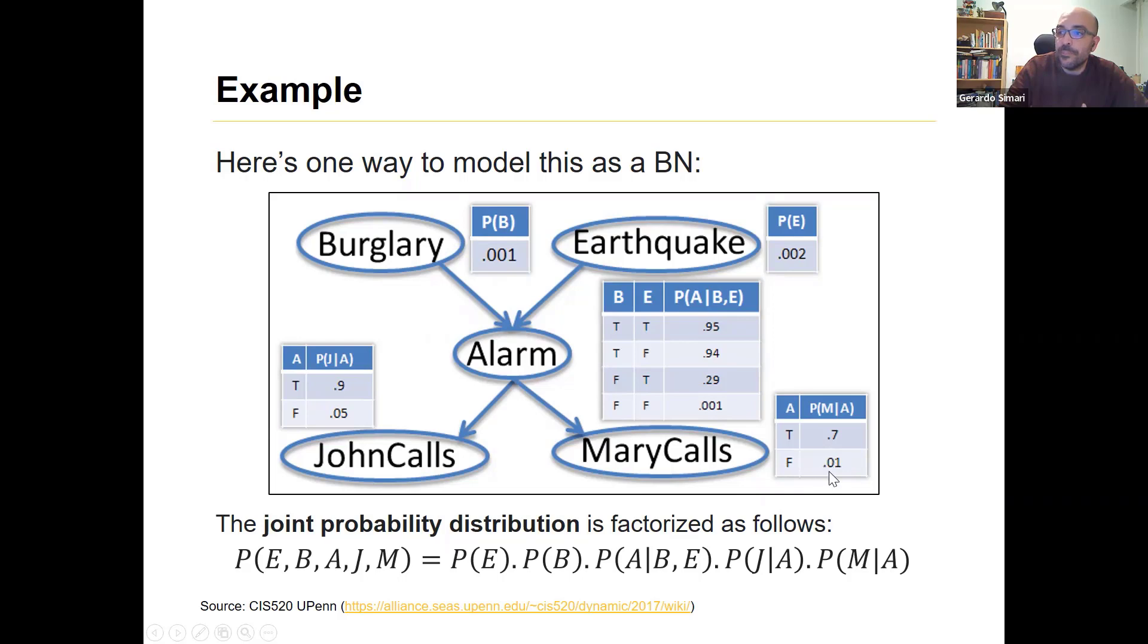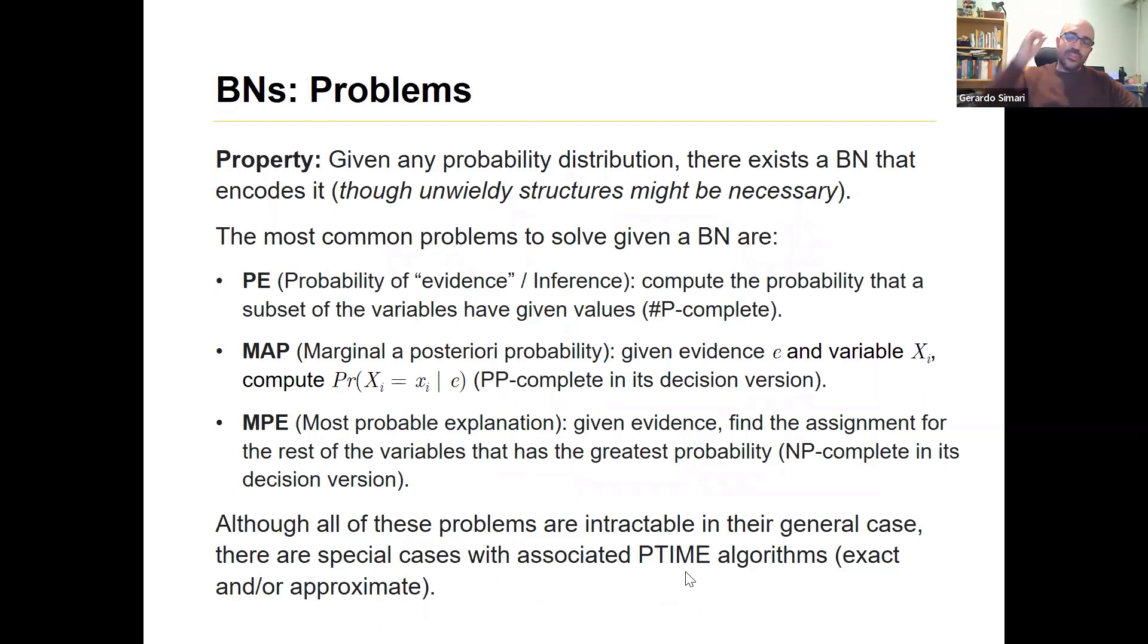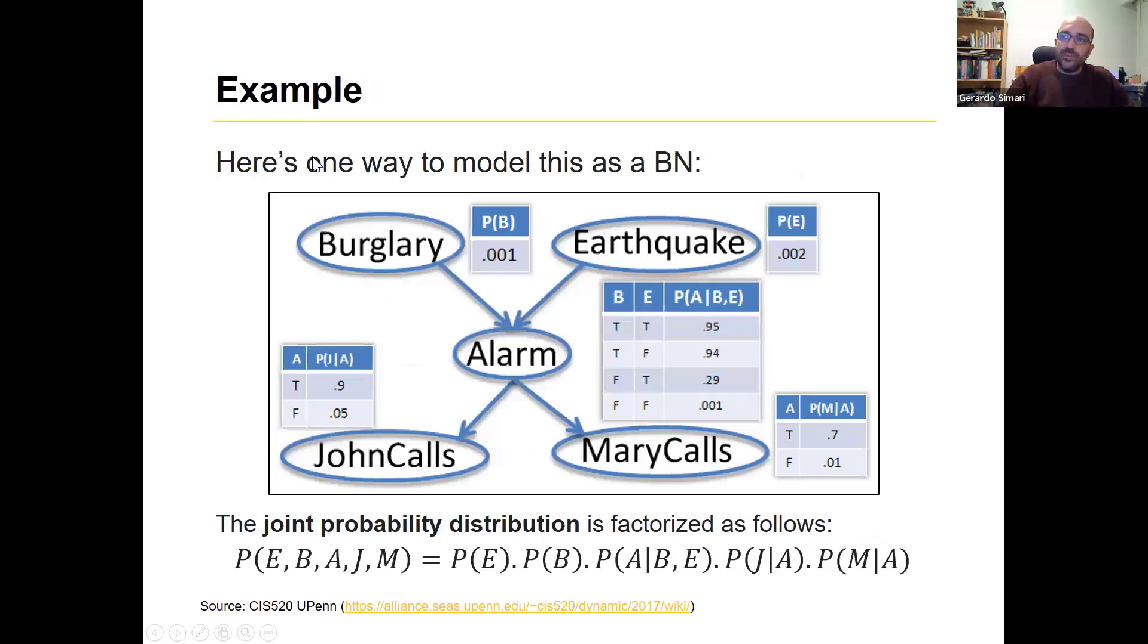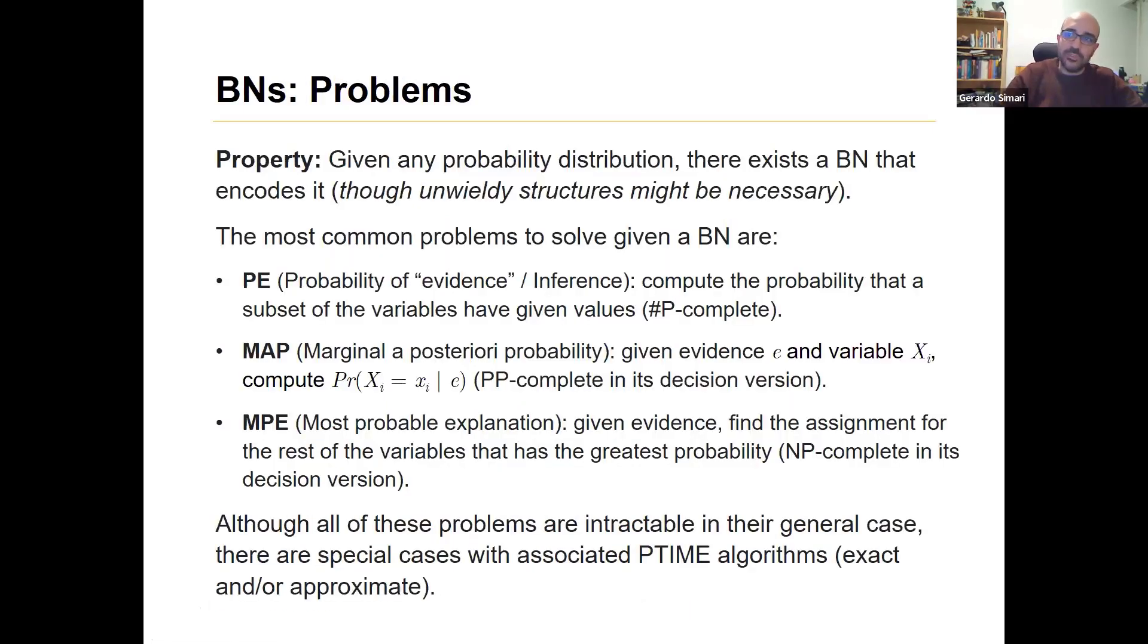So the theory tells us that the joint probability distribution of all possible worlds, given these five variables, can be factored in this way because of the conditional independence that I was talking about in the previous slide. So there's a really interesting property that given any probability distribution, there exists a Bayesian network that encodes it, though there might be very unwieldy structures in the graph that might be necessary for this to happen. So it's not the case that any probability distribution can be encoded in a nice one like this. This is a pretty nice structure. You see, it's a very simple structure, but imagine if it was five variables, you could have everybody connected in the whole mess, and that would be not a very good model.